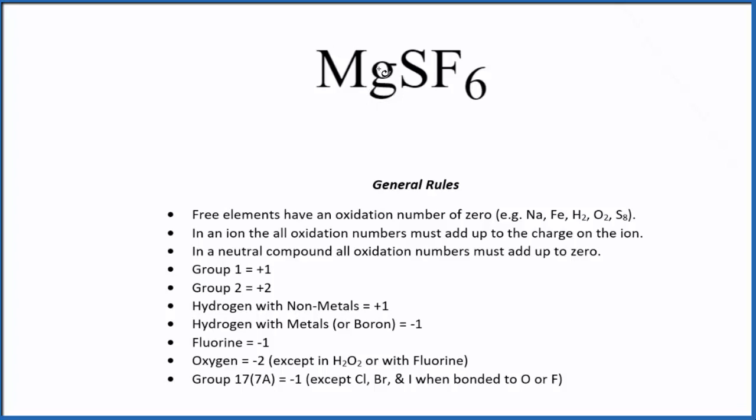First off, when we look at magnesium here, magnesium's in group 2 on the periodic table. That's going to be plus 2. Sulfur, we don't know what that is, but fluorine, that's always negative 1.